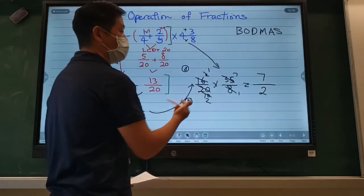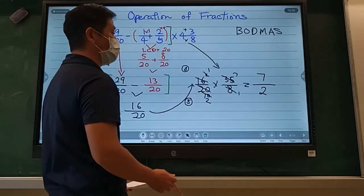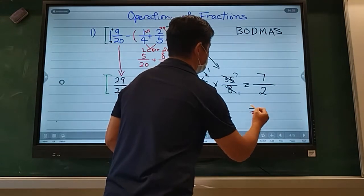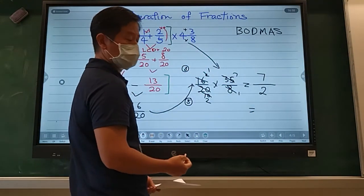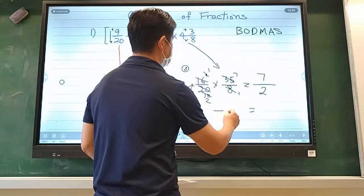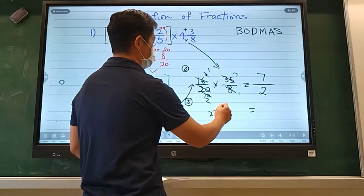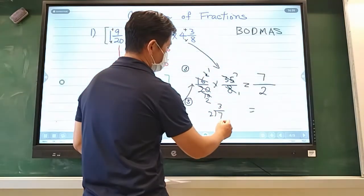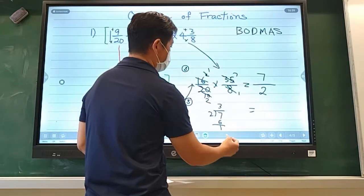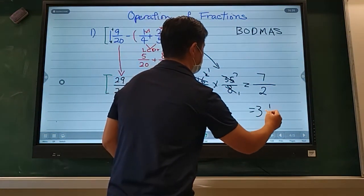Now, you can leave that as seven over two or you could convert that into mixed number. Okay? So mixed number, how can you convert it? Now, you could go do a division. Seven divided by two. Two goes in three times and remainder one. So that would be three and one-half.